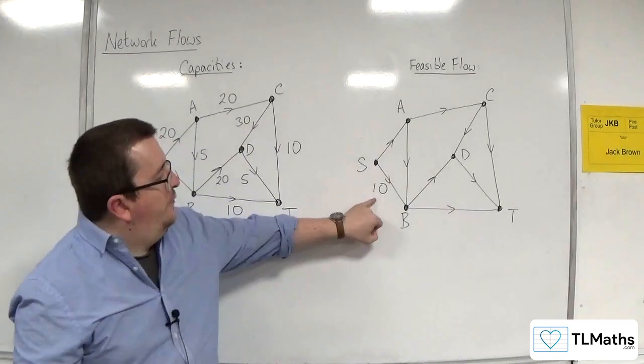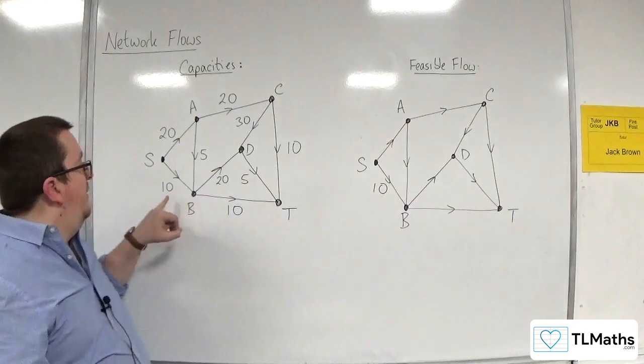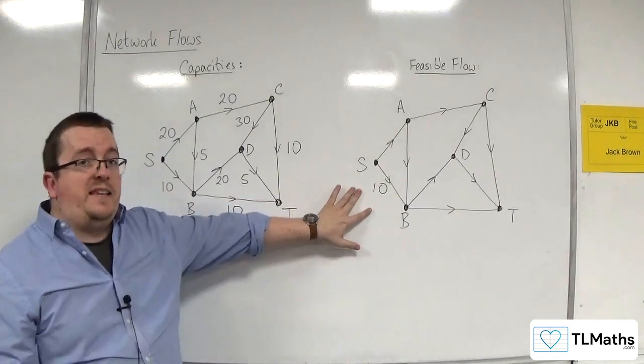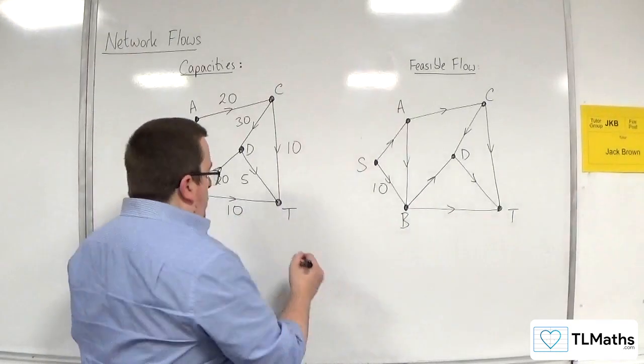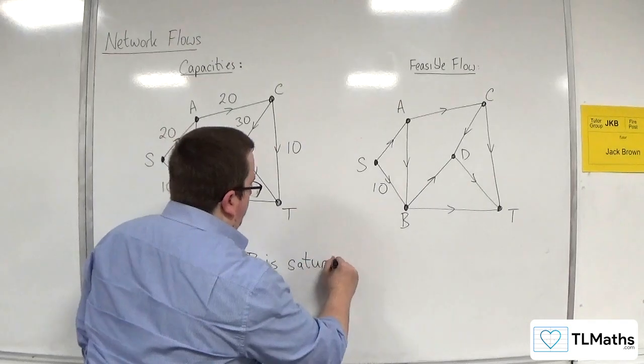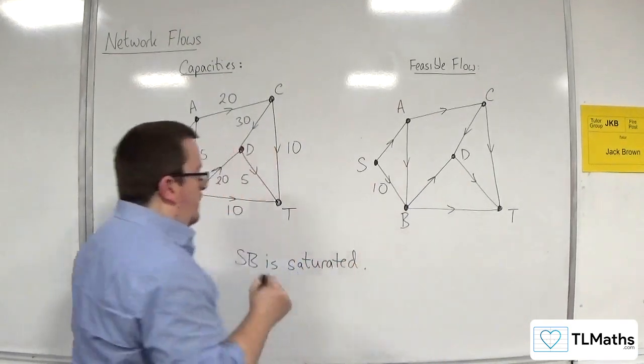Let's say I put a flow of 10 going from S to B. Now, because the flow from S to B is the same as its capacity, we refer to S to B as being saturated. So S to B is saturated.